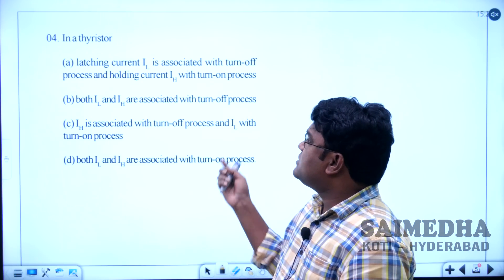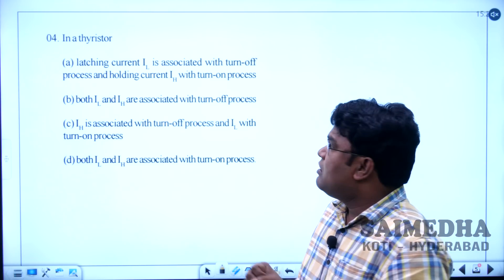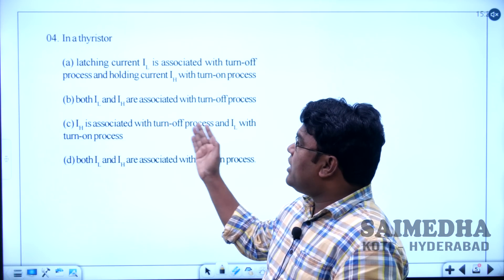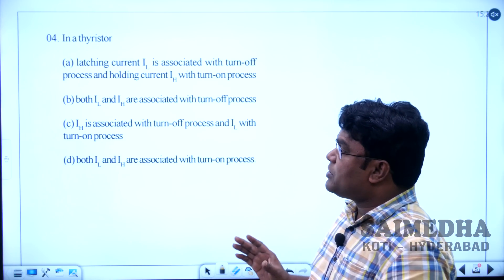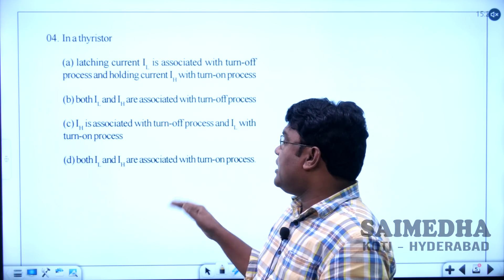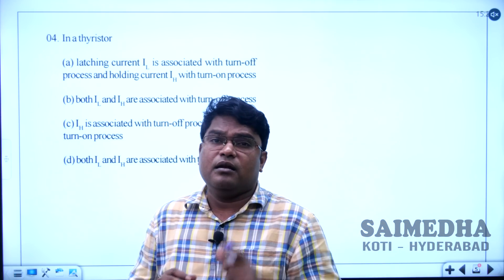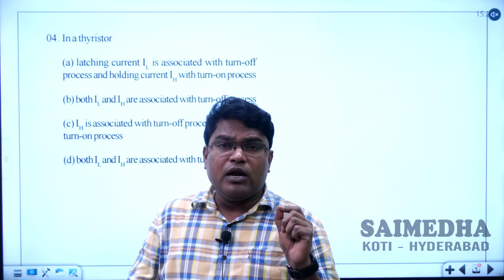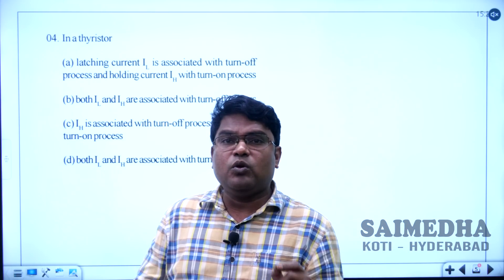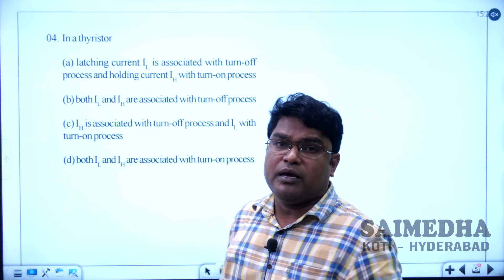Let us solve question number 4. The question is: in a thyristor, latching current IL is associated with the turn-off process and holding current IH with the turn-on process — or other combinations. Latching current IL is defined as the minimum value of anode current above which the SCR maintains the turn-on state even though the gate signal is removed; it is always related to the turn-on process.